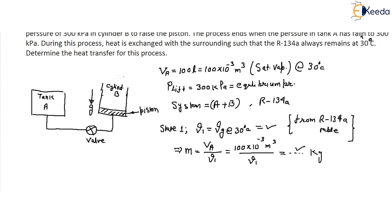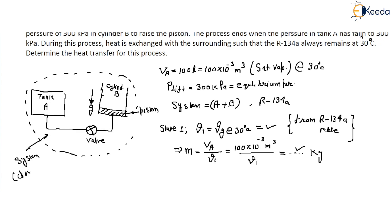If we take Tank A plus Cylinder B together as the system, no mass will transfer across the boundary, so this is a closed system. Individually, Tank A or Tank B would each be open systems. But together, A plus B form the control mass system — there is no mass flow across the system boundary, but energy will transfer.